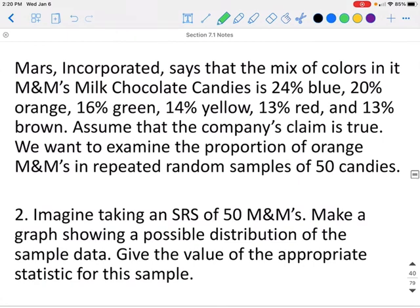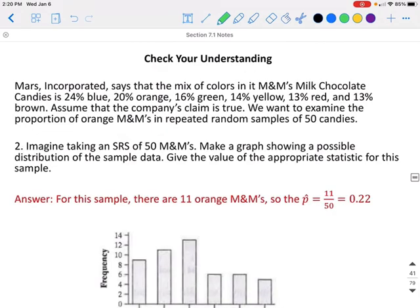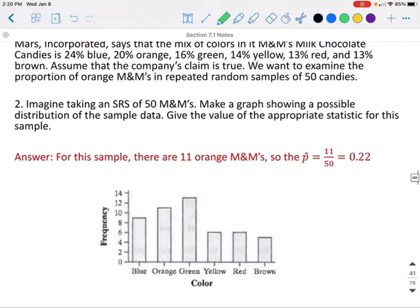Imagine taking a simple random sample of 50 M&Ms. Make a graph showing a possible distribution of the sample data. Give the value of the appropriate statistic in this sample. For example, we could take a sample of 50 M&Ms and we could say that we got 11 of them were orange. We could say how many we got were blue out of the 50, how many were orange, how many were green, yellow, red, and brown.